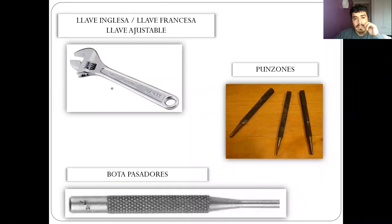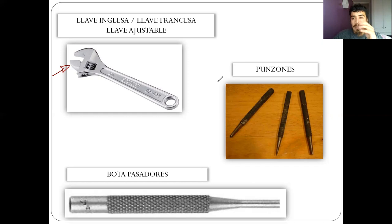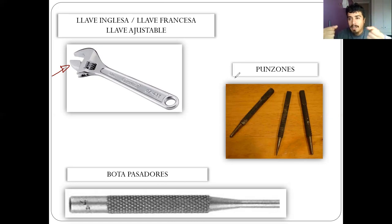Aquí tiene una llave inglesa o francesa; el nombre más correcto es llave ajustable, donde se mueve la punta móvil ajustándose a la fija para sacar algún perno o tuerca. Los punzones sirven específicamente para hacer un punto en una placa metálica, con lo cual después se puede ir con el taladro. Muchas veces cuando se taladra en una pieza metálica, el contacto va a resbalar, entonces estos punzones permiten hacer esa marca.